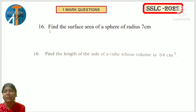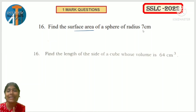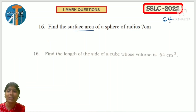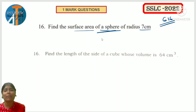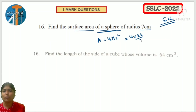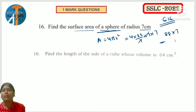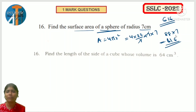MCQ on surface area: sphere with radius 7 is given, find the surface area. Using 4πr²: 4 × (22/7) × 7 × 7. The 7s cancel giving 4 × 22 × 7 = 88 × 7 = 616. So the answer is 616. Another MCQ: find the length of side of a cube whose volume is 64 - since 4³ = 64, the length is 4 cm.